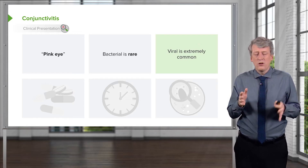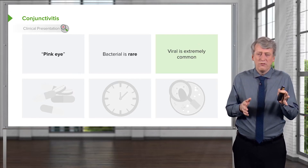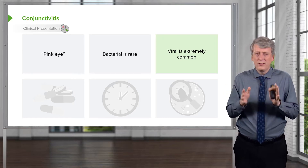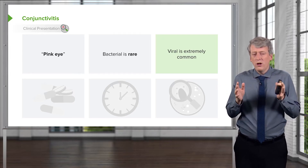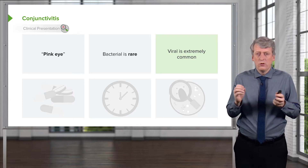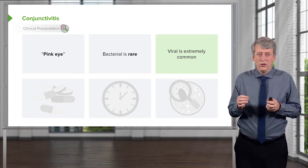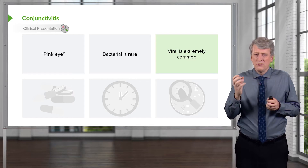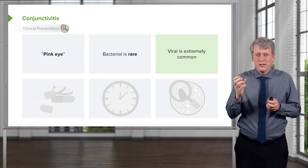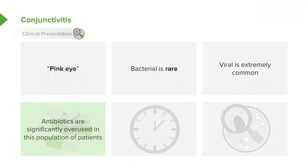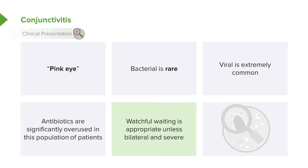Classically, we taught that if it's one side it's bacterial and if it's both it's viral — but that's just not true. It's very hard to predict whether something is bacterial or viral, but generally they're almost all viral. Bacterial conjunctivitis is very severe with purulence and drainage. Antibiotics are probably overused in a substantial portion of patients with conjunctivitis. Watchful waiting is appropriate unless it's bilateral and severe, and then we'll probably start antibiotics.